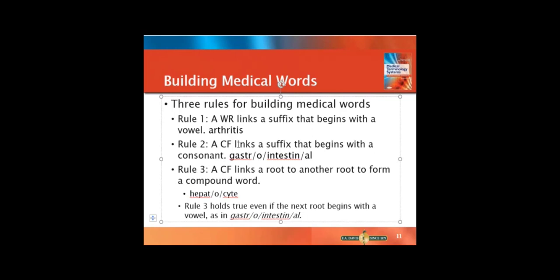Last rule, if you are linking together two word roots or combining forms such as gastro, which means stomach, and intestino, which means intestines, then you always use that combining O. So AL means pertaining to the stomach and intestines. So that O will link those. I'm not going to linger on this because I just told you, this is definitely the most difficult part, and there's some practice activities that I think will make it clearer. But there are three rules to building them.